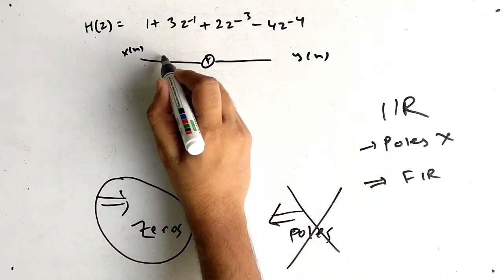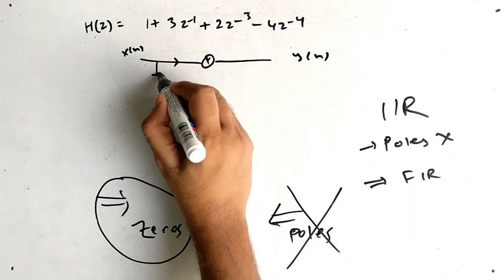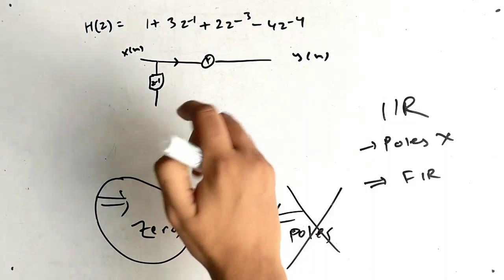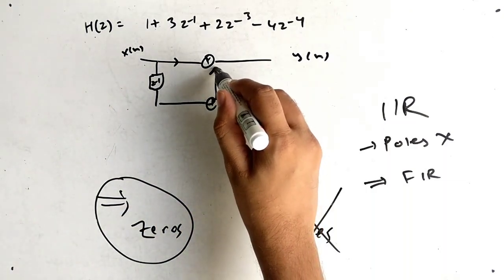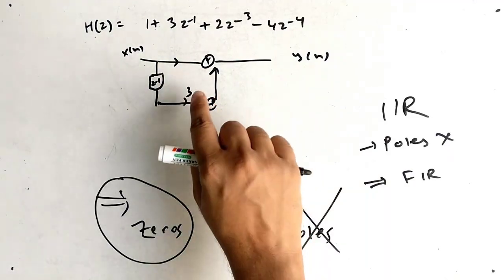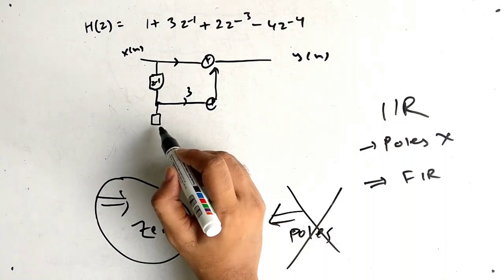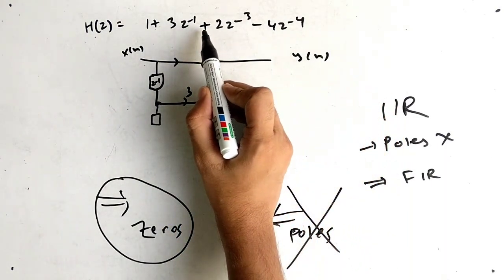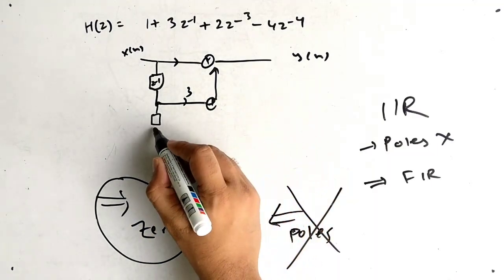First, the constant 1 passes through as is. Then we have a delay. The coefficient is 3, so the multiplier is 3. Then we have one more delay — z⁻². But there is no z⁻² term in the equation, so we leave that line and move forward.